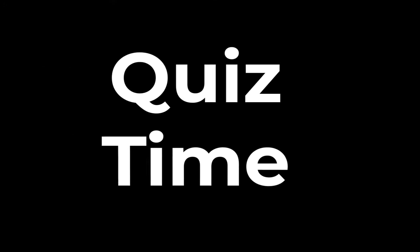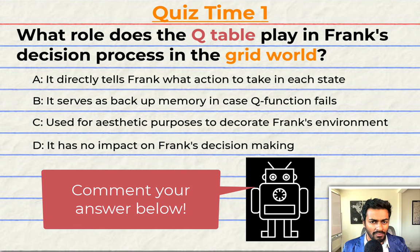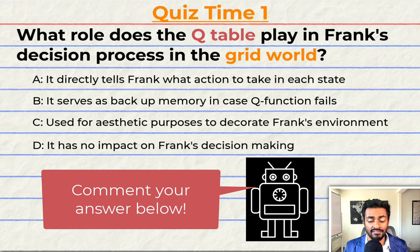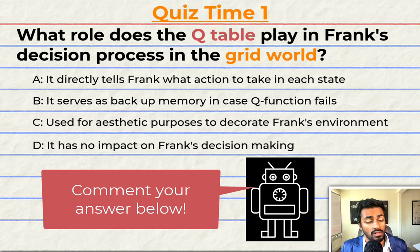Quiz time! Have you been paying attention? What role does the Q-table play in Frank's decision process in the simplified world of nine squares? A: it directly tells Frank what action to take in each state. B: it serves as a backup memory for Frank in case the Q-function fails. C: it's used for aesthetic purposes to decorate Frank's environment. Or D: it has no impact on Frank's decision-making and he relies solely on the Q-function. Comment your answer down below and let's have a discussion.